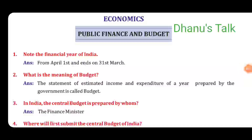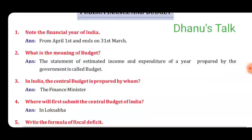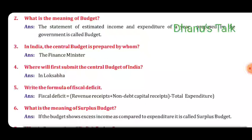From Economics, Chapter: Public Finance and Budget. First question: Note the Financial Year of India. Answer: It starts from April 1st and ends on 31st March. Second: What is the meaning of budget? Answer: The statement of estimated income and expenditure of a year prepared by the government is called a budget. Third: In India, the central budget is prepared by whom? Answer: The Finance Minister. Fourth: Where is the central budget of India first submitted? Answer: In Lok Sabha. Fifth question: Write the formula of fiscal deficit. Answer: Revenue receipts plus non-debt capital receipts, then total expenditure.